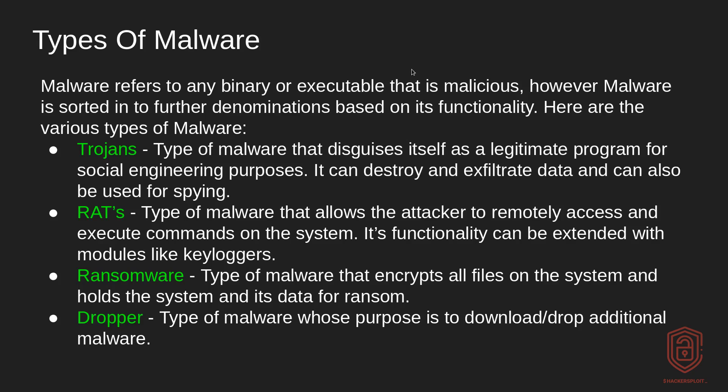We then move on to ransomware, which is becoming extremely popular. We'll be taking a look at decrypting and analyzing some of the various strains of ransomware. It is a type of malware that encrypts all the files on the system and holds the system and its data for ransom — you have to pay a ransom to decrypt those files. We then have droppers. A dropper is a type of malware whose purpose is to download or drop additional malware onto the system. They are usually used to avoid initial detection, and may be bound as a legitimate program that then drops the malware onto your system.